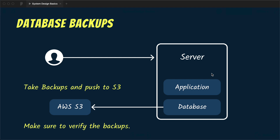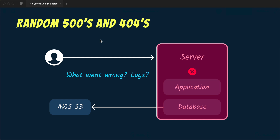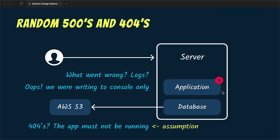Now the database backup strategy is in place, users are happy, but after some time the application goes down again. People are getting 500 errors and then 404s. You check the server and the droplet is still there, so it's not the same issue as before. You SSH in to look at the logs but find nothing, because logs were only written to standard output. Since you're getting 404s it means the application is down — the Node server is not running, which is why it's returning 404s.